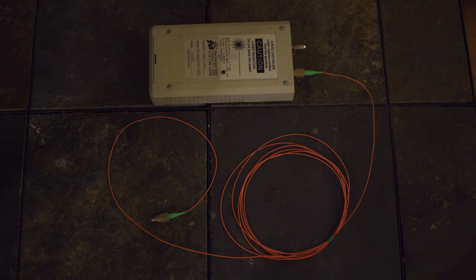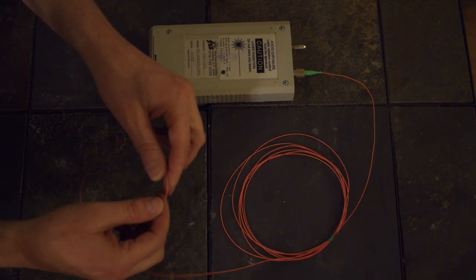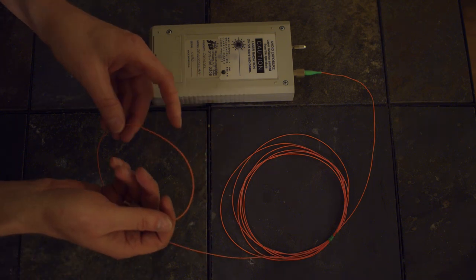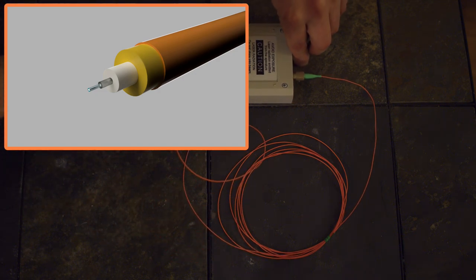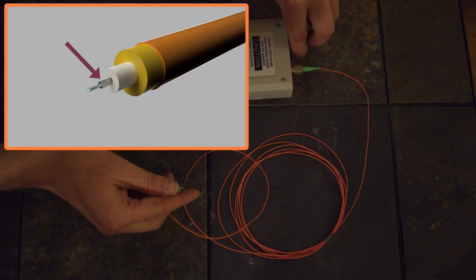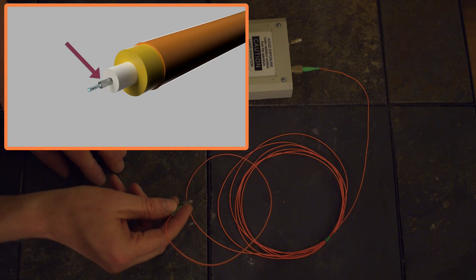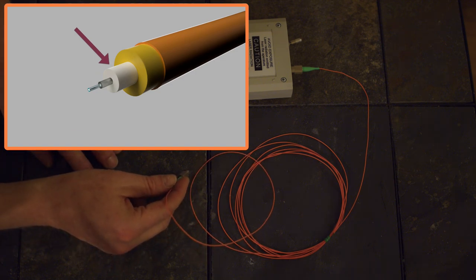To demonstrate this, I have a fiber cable here that has very few layers of protection surrounding the glass. Don't worry, we'll cover the parts of a fiber cable soon. For now, just know that this one only has the 250 micron clear coat and an orange 900 micron buffer covering the glass.